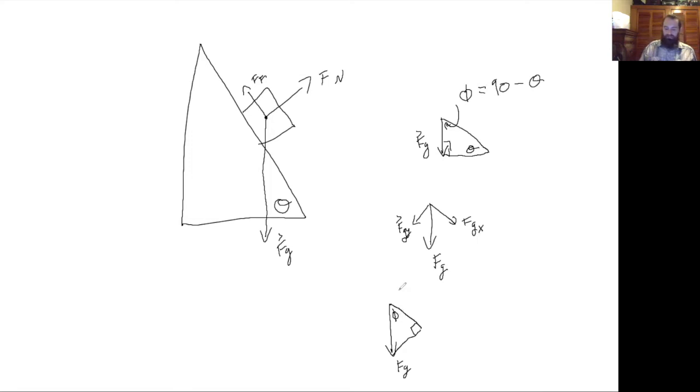So this is the angle between the gravitational force, which points straight down and the angle along the ramp phi.